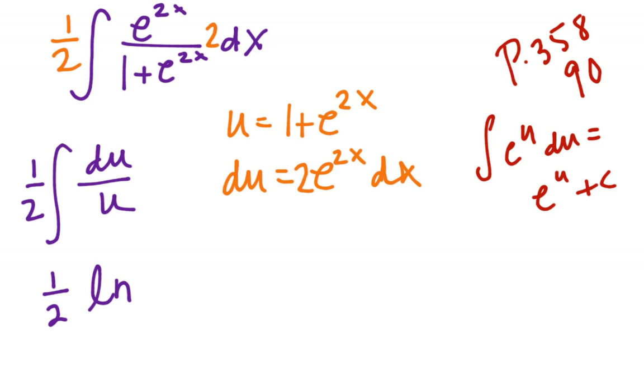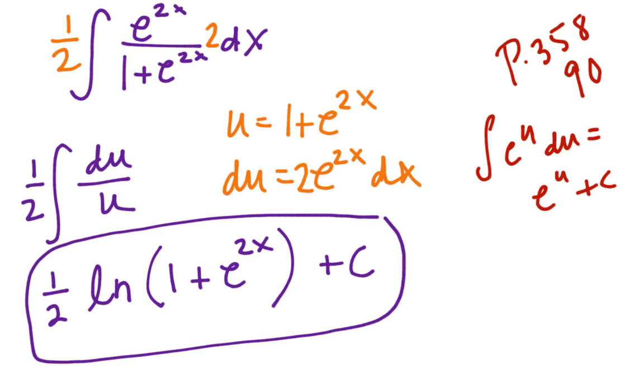Well, what is u? 1 plus e to the 2x plus a constant. Do I need those absolute value bars there? Hmm. I'll leave that question up for you.